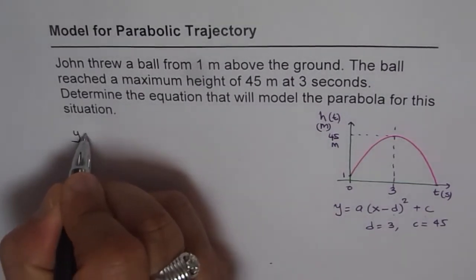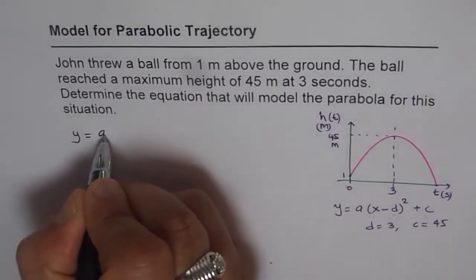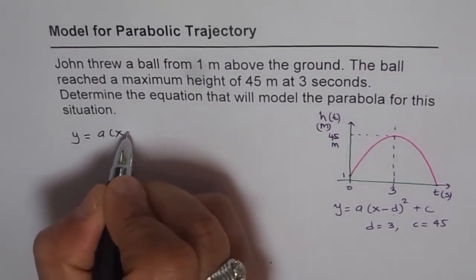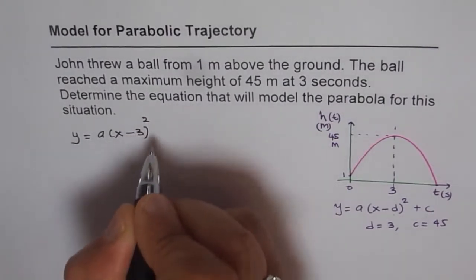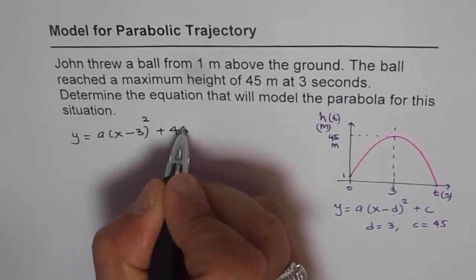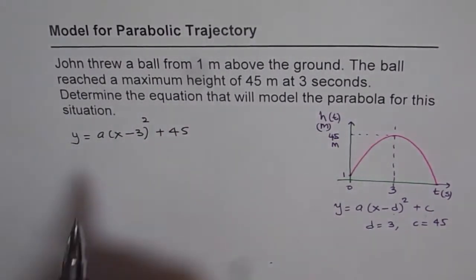So we will write this as equation y equals a times (x minus 3) squared plus 45. Now in this equation we have one unknown which is a. How to find a? That is kind of tricky.